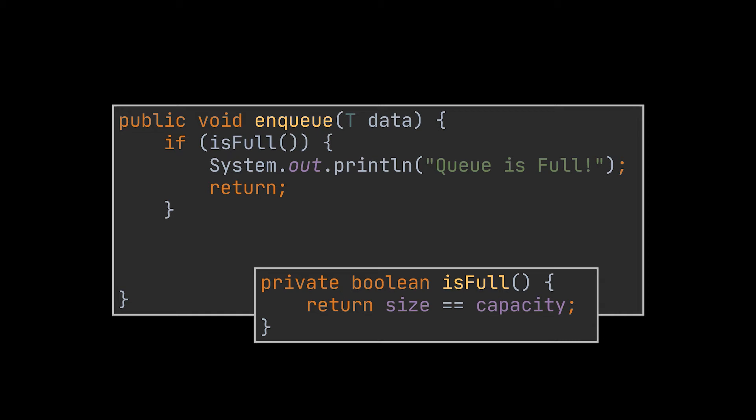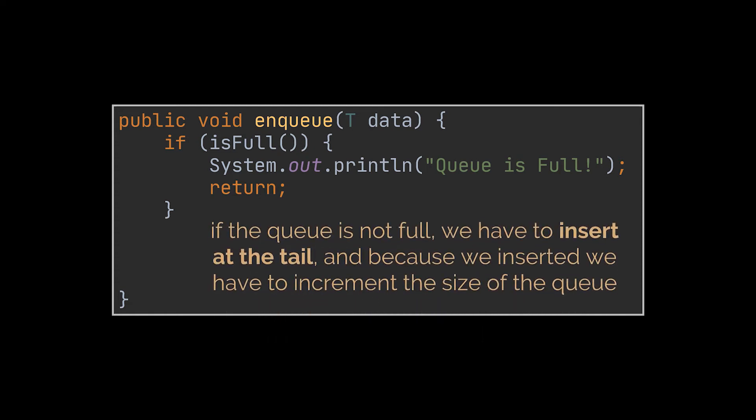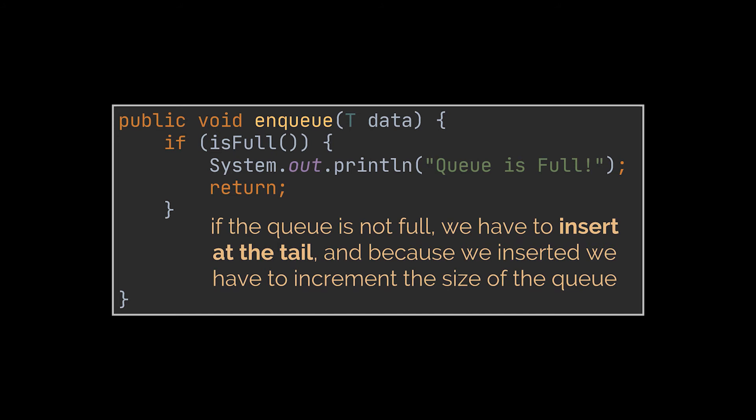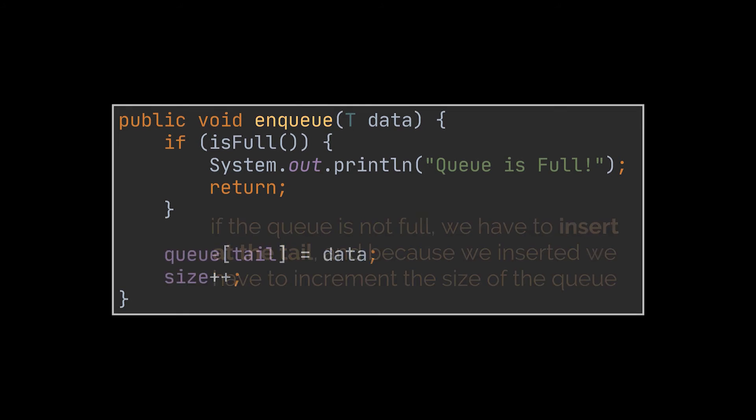Checking if the queue is full is straightforward: the queue is full when its size equals its capacity. If the queue is not full, we insert the data item at the back or tail of the queue — just like a new person going to the back of a line. We then increment the size to keep track. In code, that is setting the element at position tail equal to data and then incrementing the size.